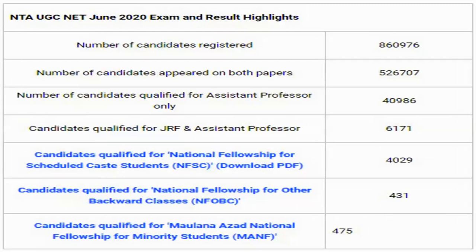Looking at the result analysis for NTA NET June 2020: totally 8.6 lakh people applied, out of which 5.26 lakh appeared. Only about 40,986 plus 6,171 people got qualified — approximately 47,000 total. So if you are preparing the right way, your real competition is only with about 50,000 people, not 8.6 lakh.